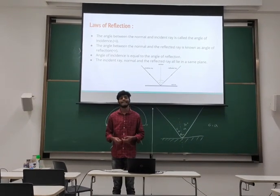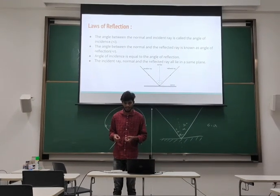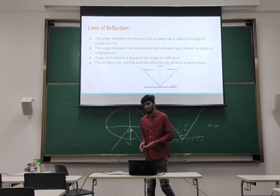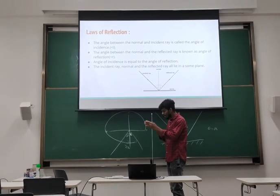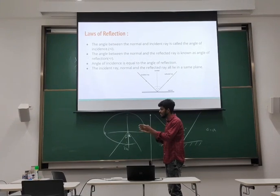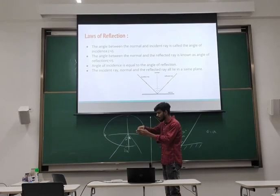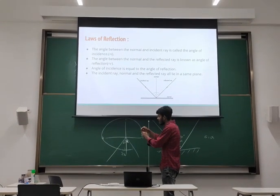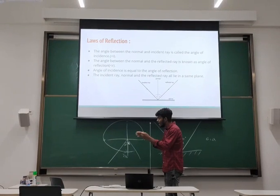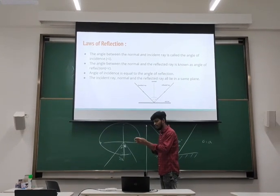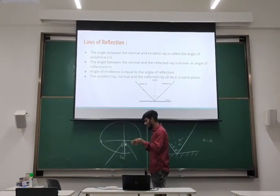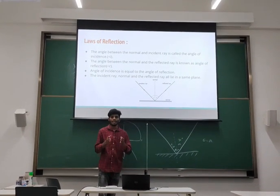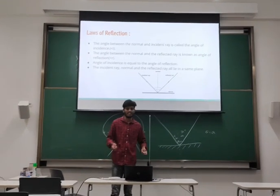You might have seen a kaleidoscope. You might have seen different kinds of multiple images. How does that form? Just imagine the kaleidoscope setup: there are two plane mirrors placed opposite to each other. There will be one object in between. The light ray will be incident and reflected back, and then reflect back again. When multiple reflections take place, multiple image formation takes place — that's how multiple images form.